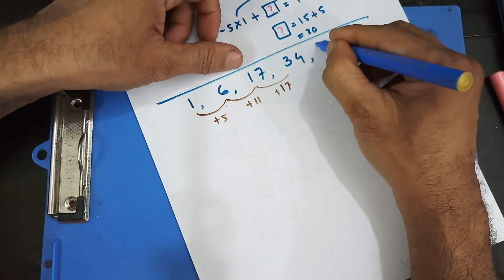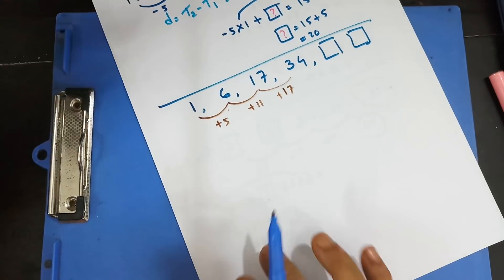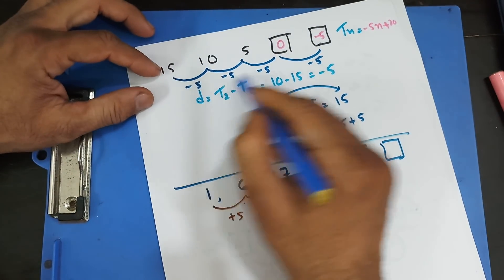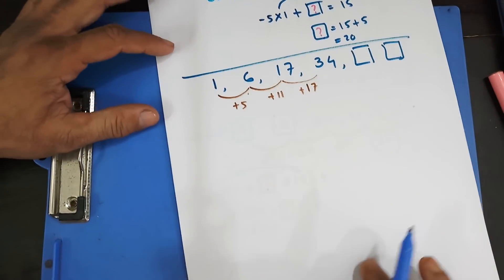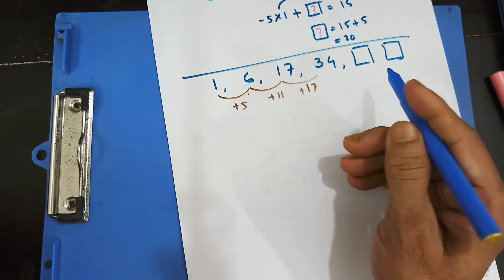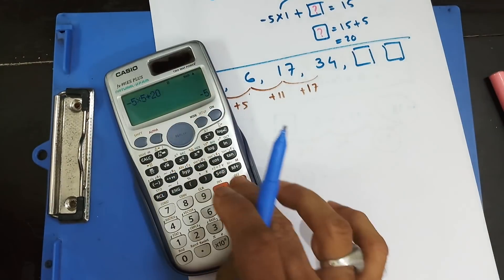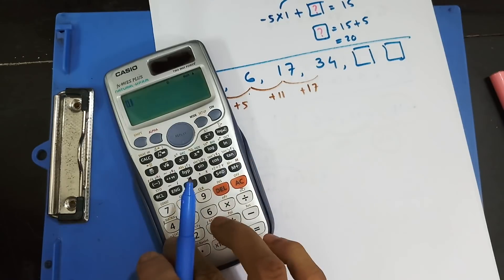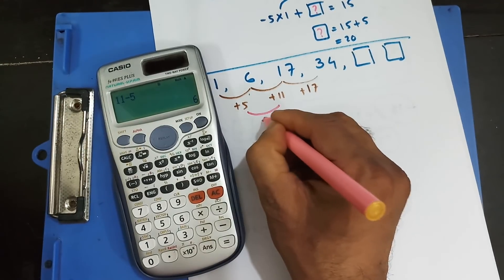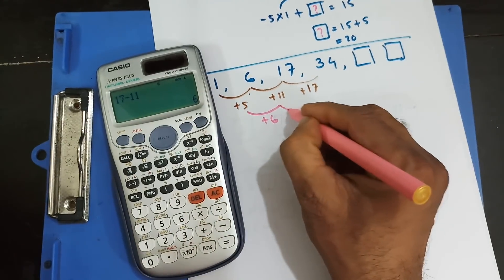Now the question is asking: what would be the next two terms? See, it's not like the ones we've done before where the first difference is common for all of them. We have 5, 11, and 17 — not common. But if you look closely: 11 minus 5 gives you 6, and 17 minus 11 also gives you 6.